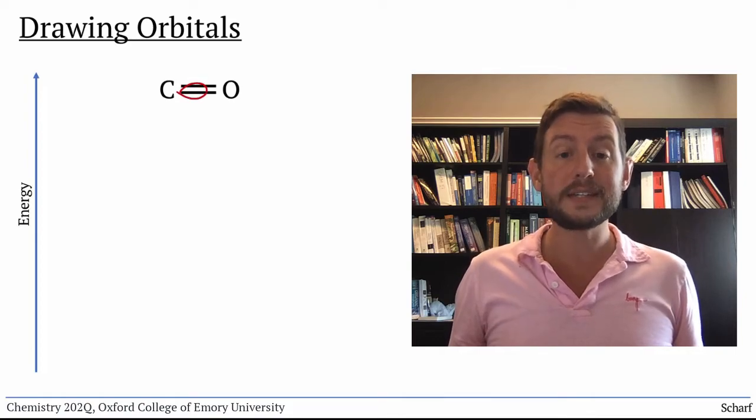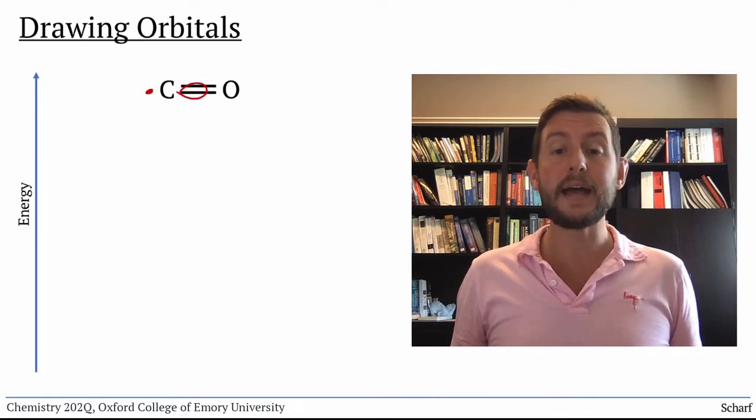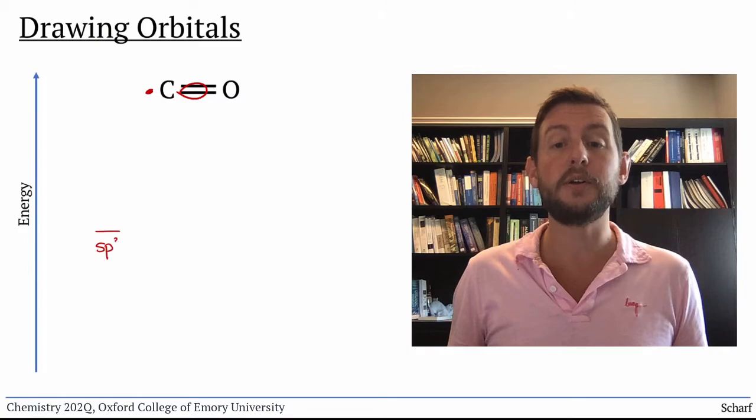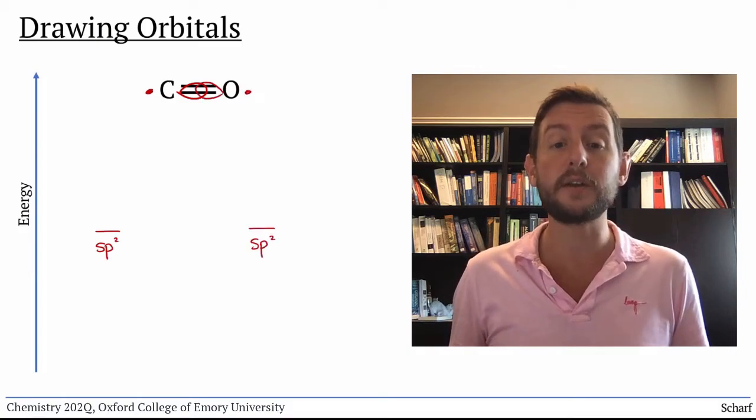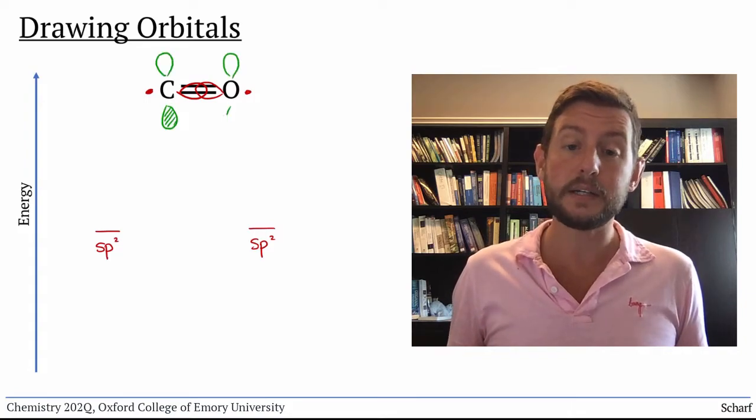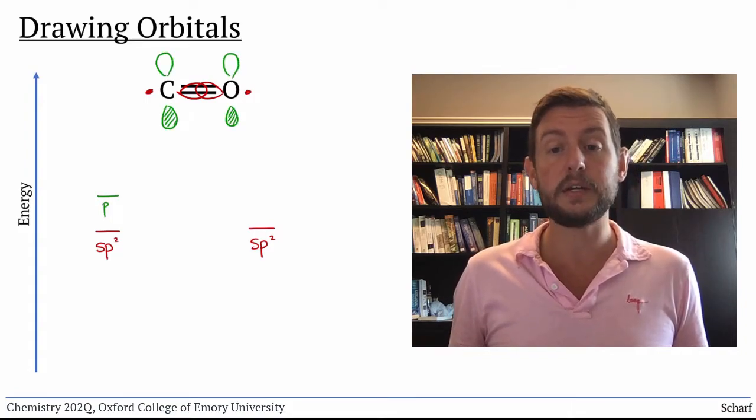The CO-sigma bond comes from an sp2 hybrid orbital on carbon, overlapping with an sp2 hybrid orbital on oxygen. And the CO-pi bond comes from p orbitals on each atom.